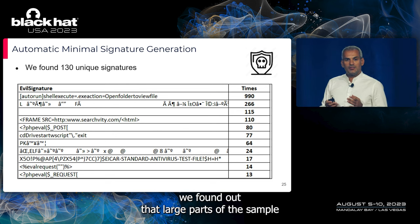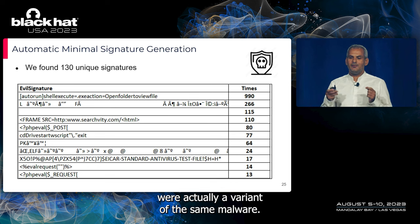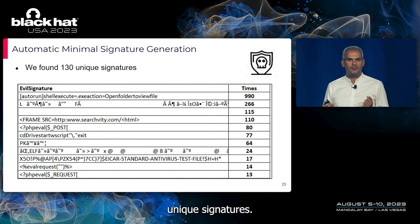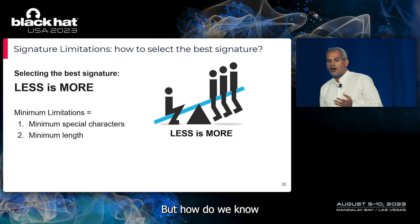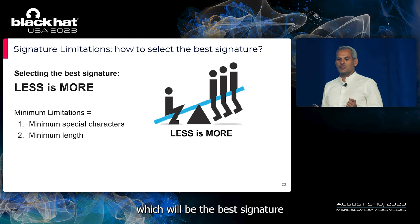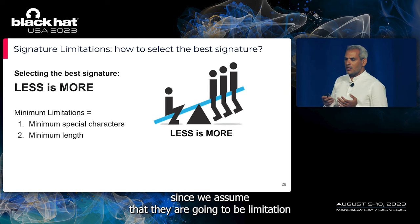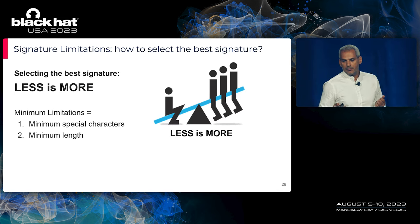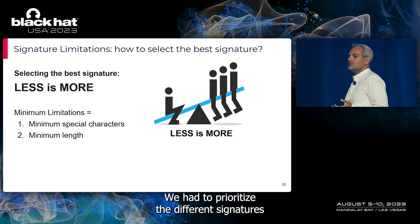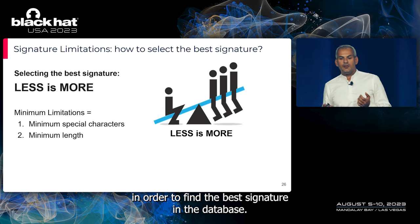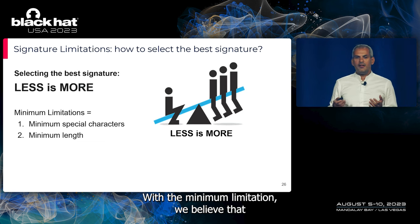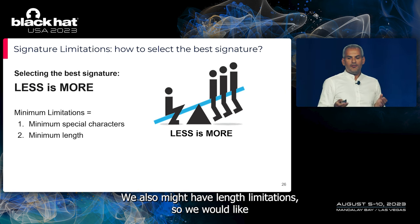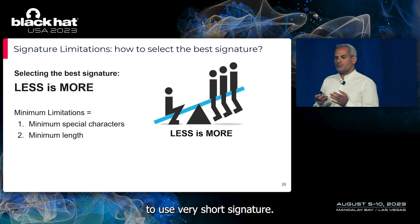We found that a large portion of the samples were actually variants of the same malware, ultimately finding only 130 unique signatures. To determine the best signature, we prioritized based on expected implanting limitations. We believed alphanumeric signatures would have fewer limitations, and we also wanted very short signatures to minimize length constraints.